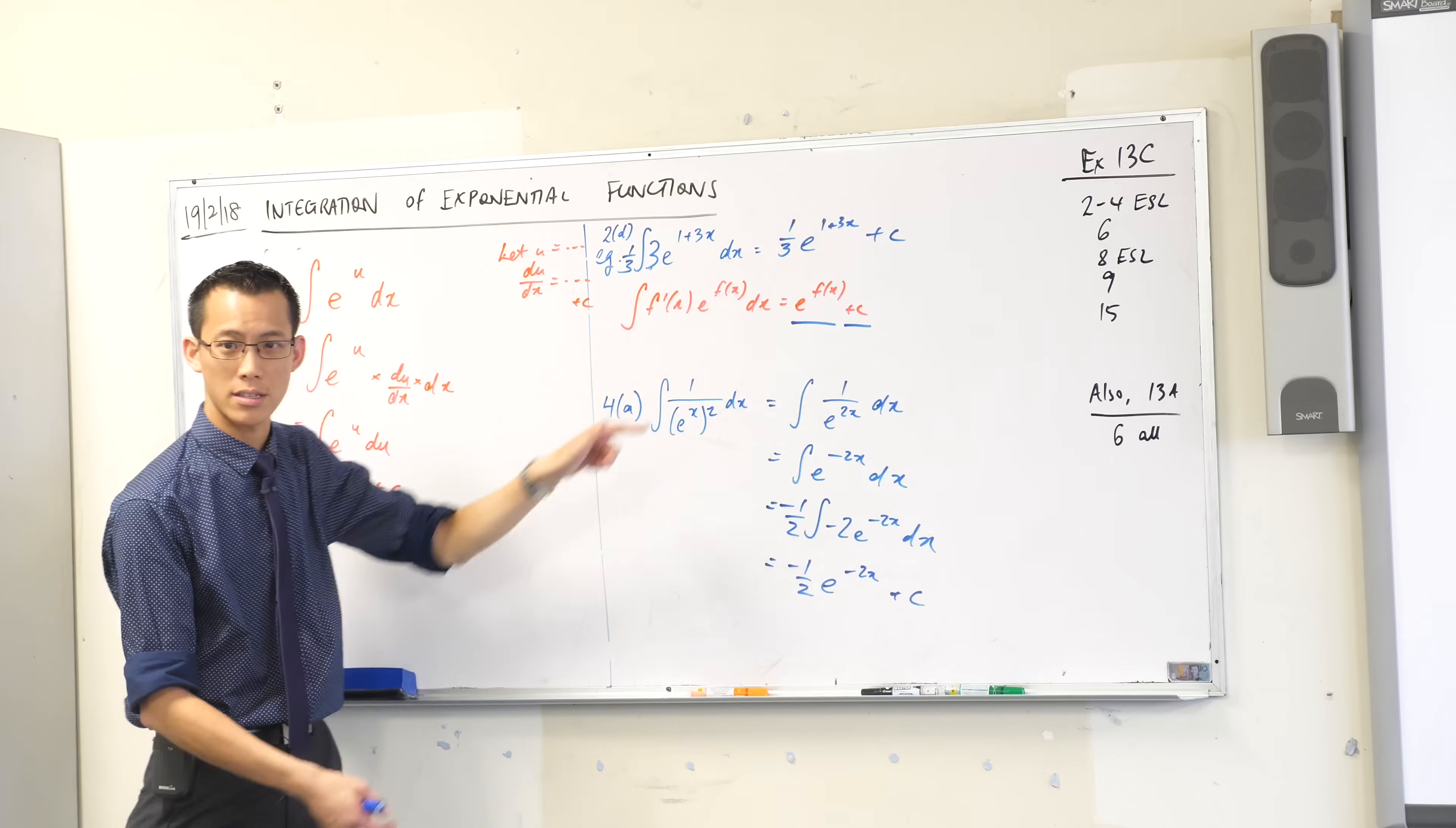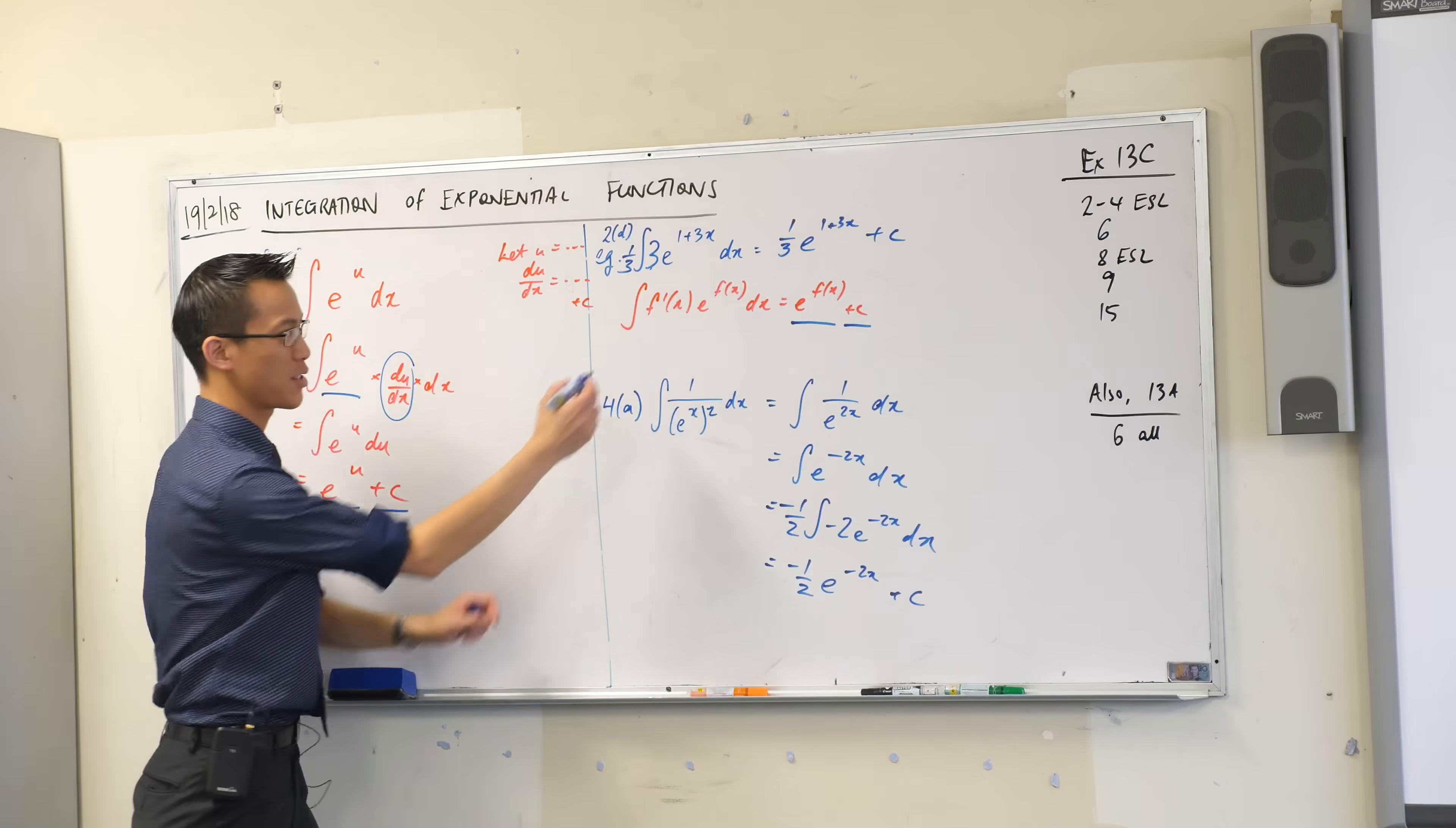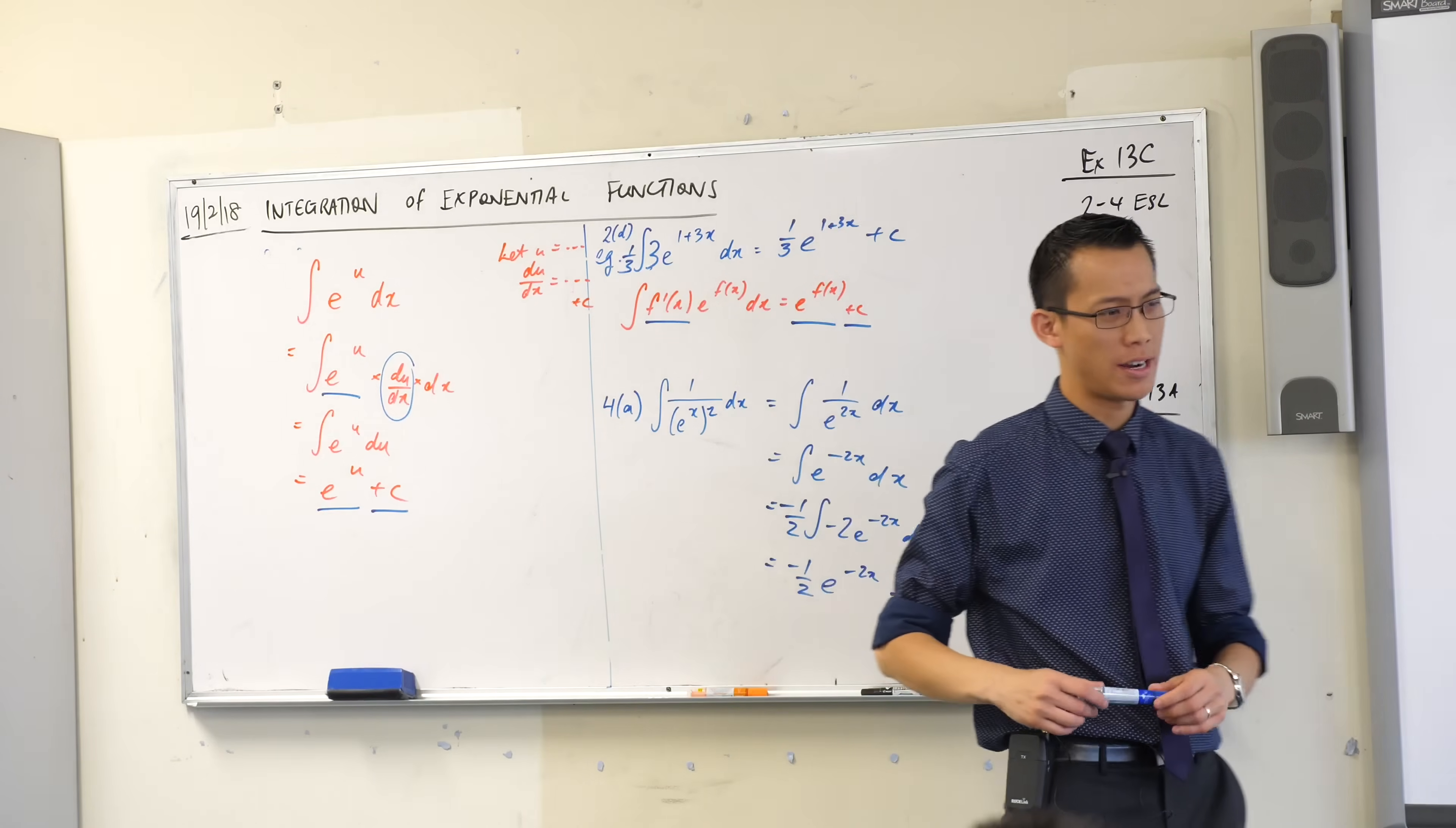Where's the e to the f of x over here? What's the equivalent? It's this guy, e to the u, right? What's this guy equivalent to? That's f dash. Do you see it? Just written in different notation because it's not f, it's u. Does that make sense? But of course it all cancels out because these derivatives can act just like fractions in this context.